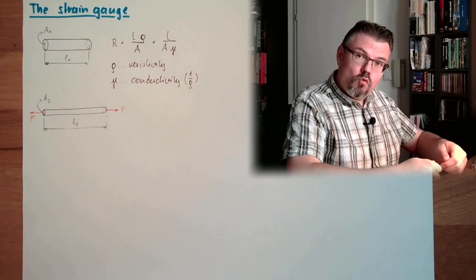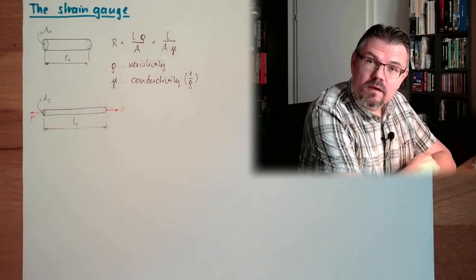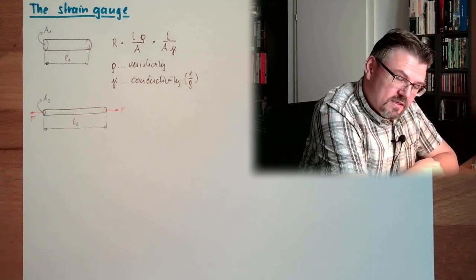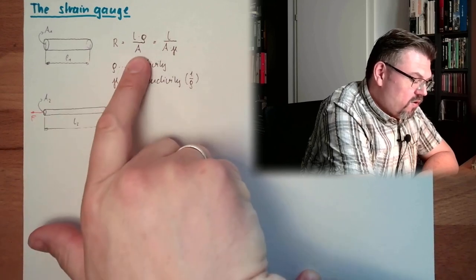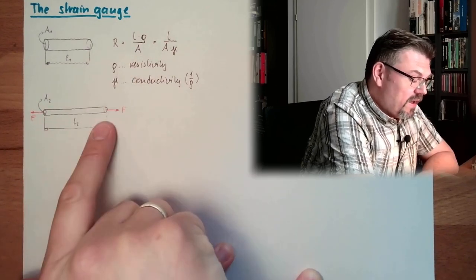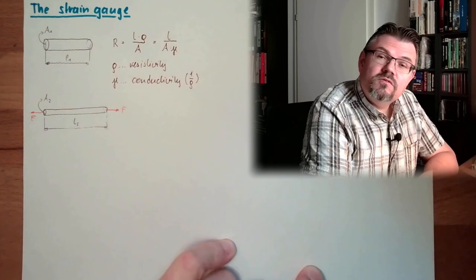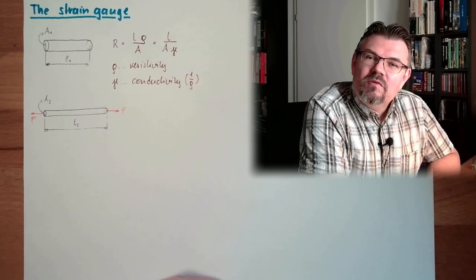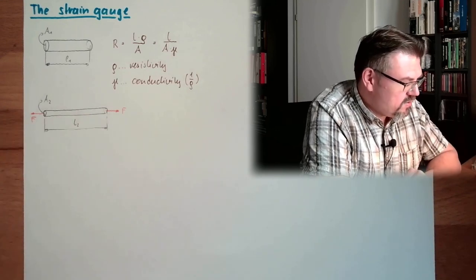This is strain. We talked about this. Strain. Now, what is happening to the resistance? We have a smaller area. This smaller area causing bigger resistance. We have a longer length. This longer length causing bigger resistance. So the resistance is going to get bigger. And this is exactly how a strain gauge is working.